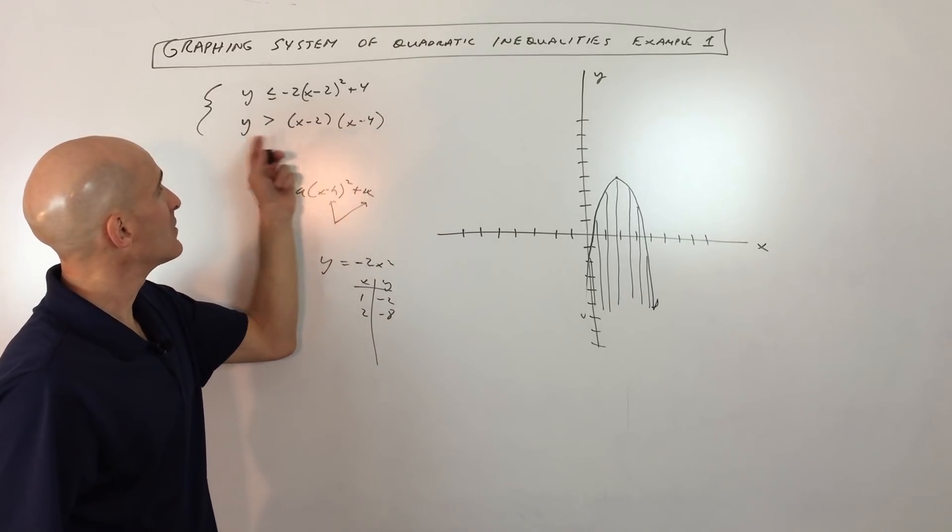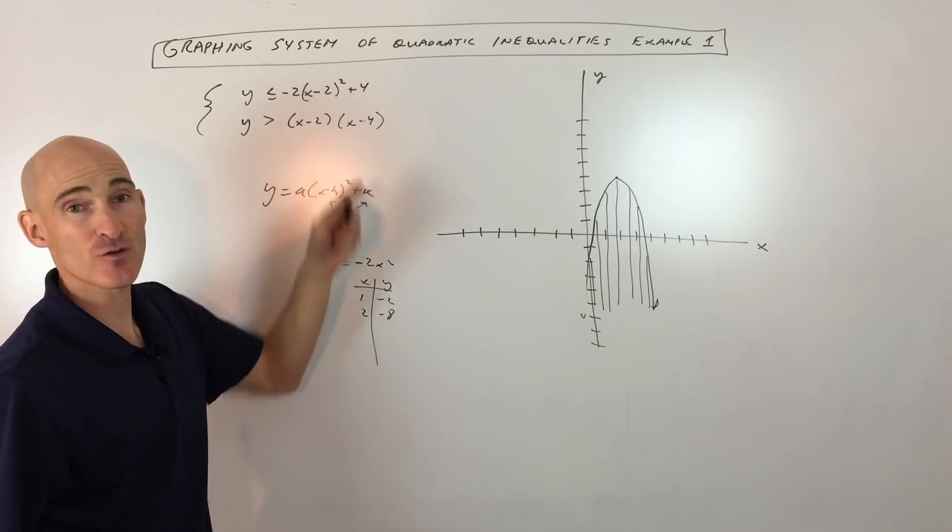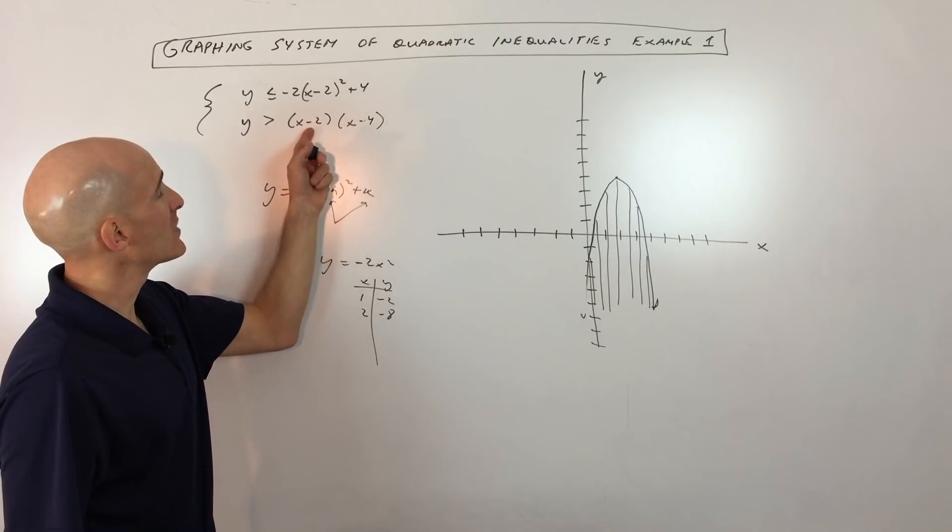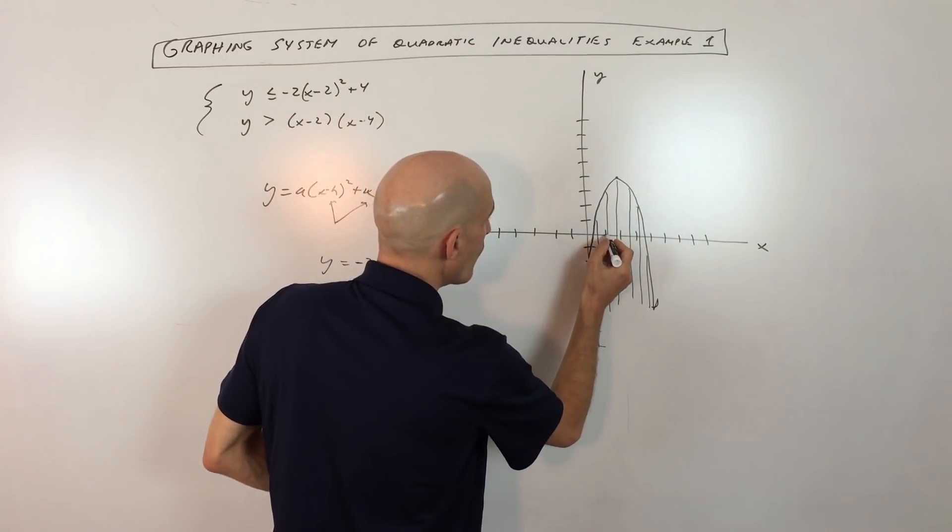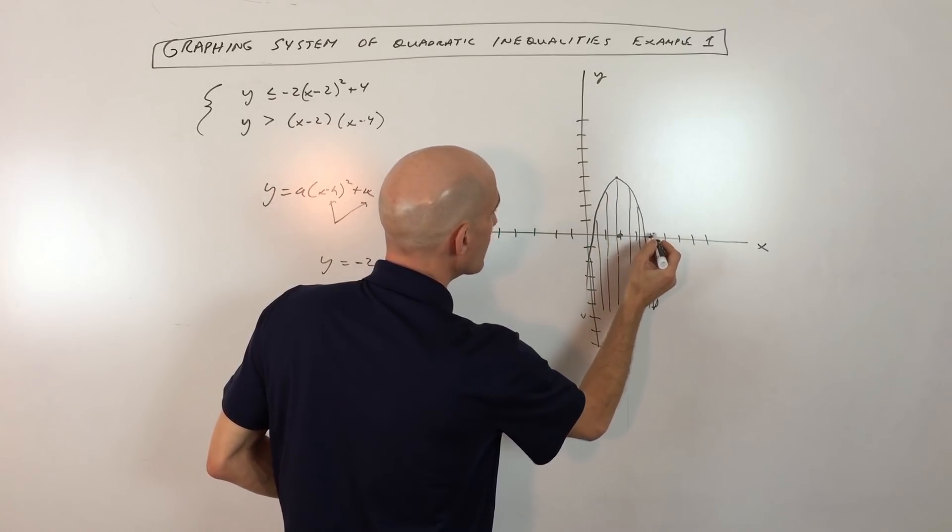Now if we want to graph this second inequality, you can see that this is a quadratic, but it's in the factored form, or also known as the intercept form. If we set these factors to zero, we get two and four. So let's see. We've got one, two, so right there, and three, four, right there.